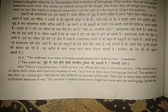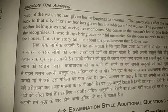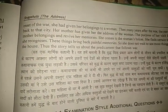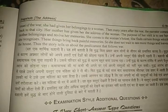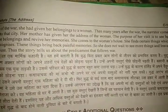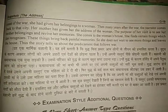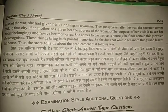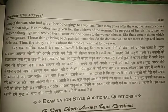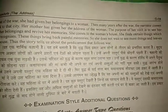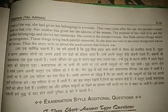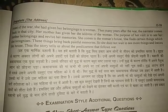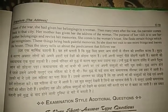The narrator's mother could not forget her home and her belongings — नैरेटर की माँ अपने घर को और अपनी वस्तुओं को भूल नहीं पाती. Before the onset of the war, she had given her belongings to a woman — युद्ध के आरम्भ होने से पहले वो बहुत सारी वस्तुएं एक औरत को दे देती है — named Mrs. Darling. Many years after the war, the narrator comes back to that city — नैरेटर उस शहर में आती है — as her mother has given her the address of the woman — उस औरत का पता उसको उसकी माँ ने दिया था. The purpose of her visit is to see her mother's belongings and revive her memories — उसके दौरे का उद्देश्य अपनी माँ की वस्तुओं को देखना और यादें ताजा करना था.